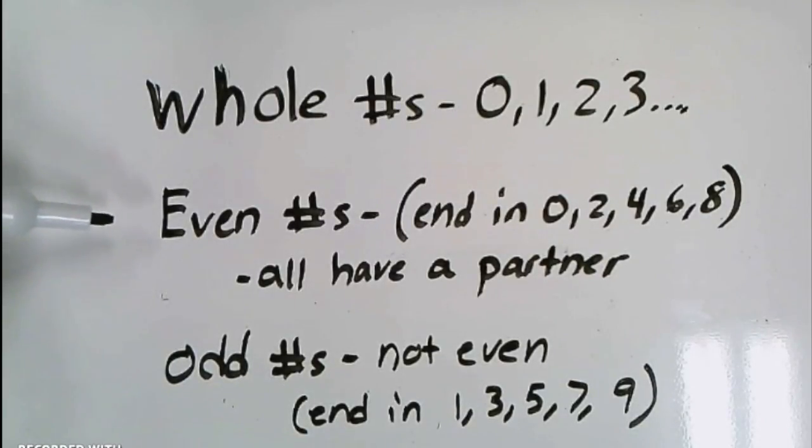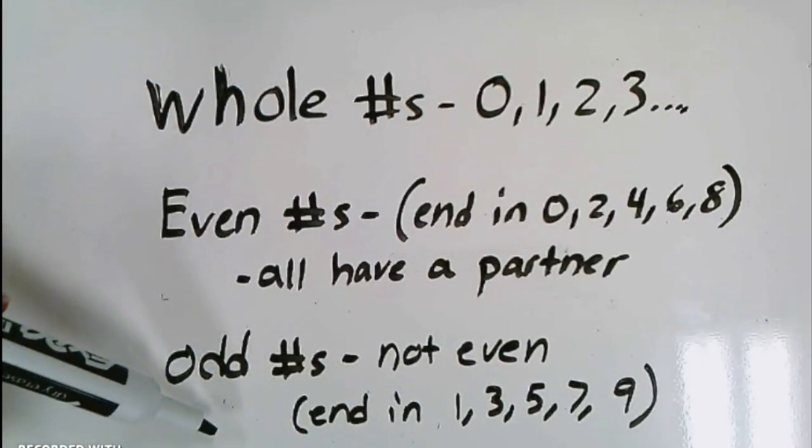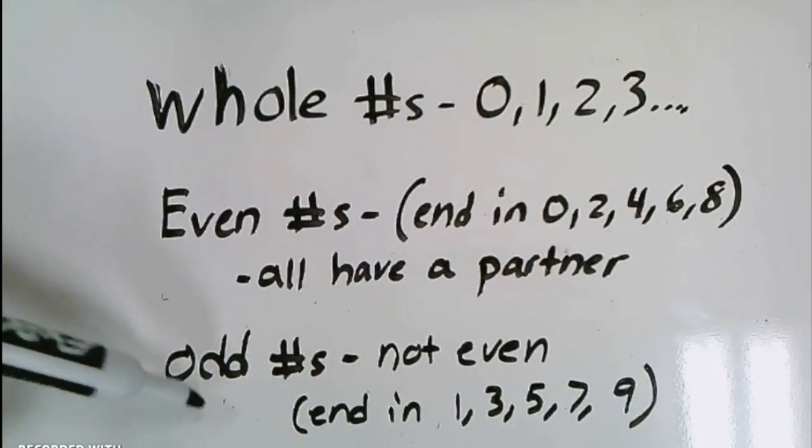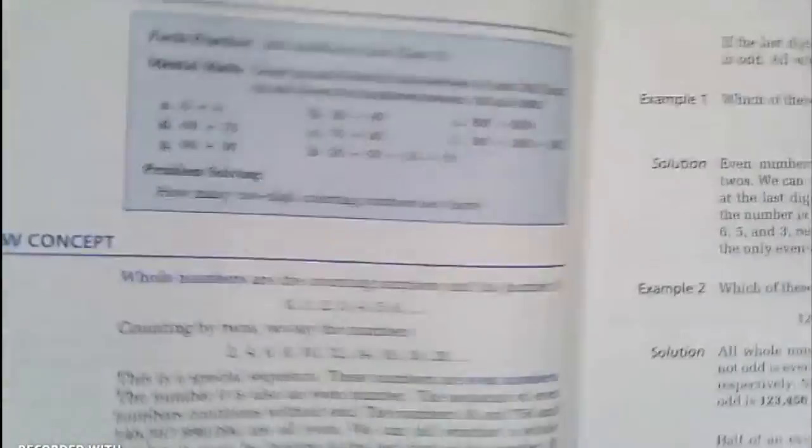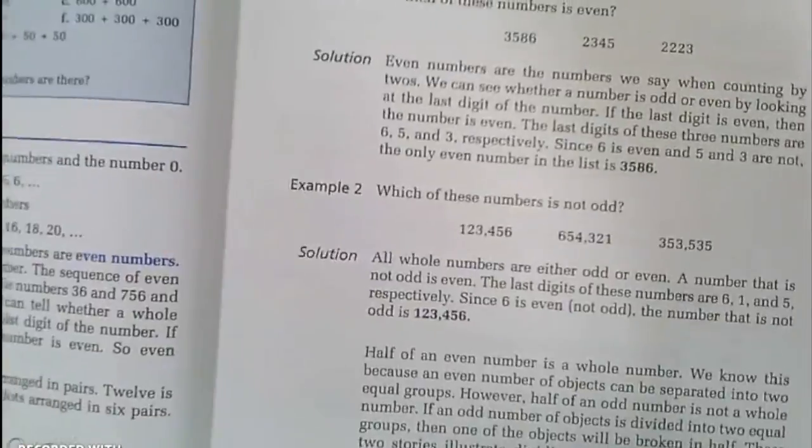Even numbers end in a 0, 2, 4, 6, or 8, and they all have a partner. And odd numbers are all the numbers that are not even. They end in a 1, 3, 5, 7, or 9, and they don't all have a partner. One number would be left out.